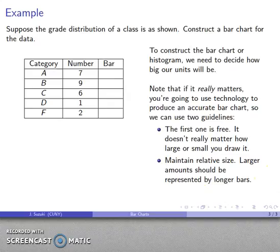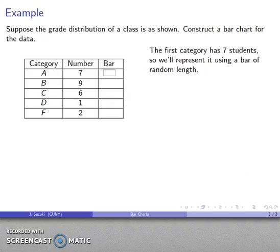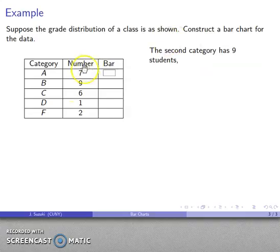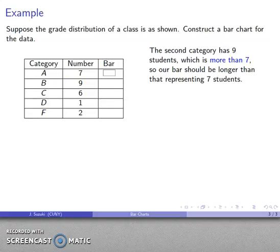Larger amounts should be represented by longer bars. For example, the first category has seven students, so I'll draw a bar of random length. My second category has nine students, and I have to think nine is more than seven. So the bar should be longer than the one representing seven students.